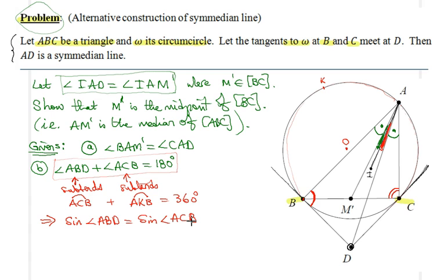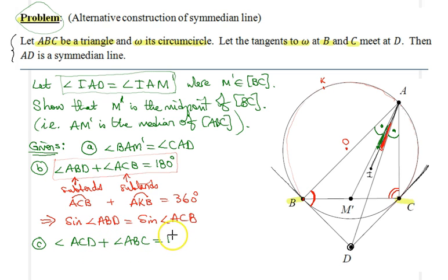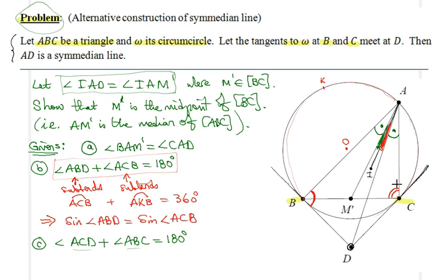Given (c): angle ACD plus angle ABC equals 180 degrees, by an analogous argument. Angle ACD subtends the major arc AC, and angle ABC subtends the minor arc AC; they add up to 360 degrees, so since both are inscribed angles, they add up to 180 degrees. We can therefore conclude that sine of angle ACD equals sine of angle ABC.